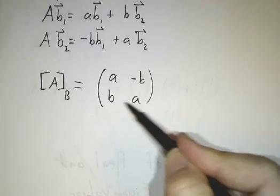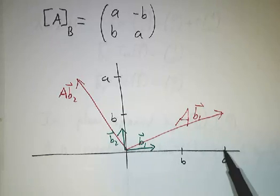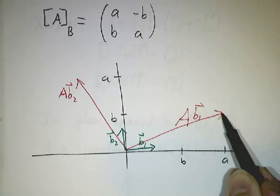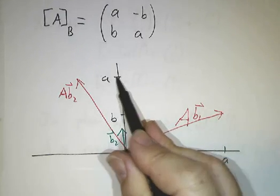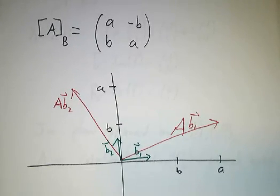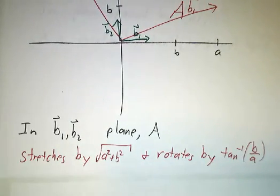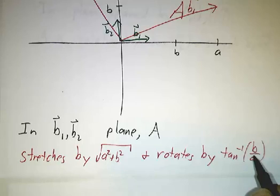That's exactly a rotation and a stretch. It takes the first basis vector to A times that basis vector plus B times the other basis vector. And it takes the second basis vector to A times the second basis vector minus B times the first basis vector. This looks exactly like a rotation and a stretch. So whenever you see an eigenvalue of A+Bi, you should always think there's some rotation and stretching going on. Stretching by √(A² + B²), rotating by the arctangent of B/A.